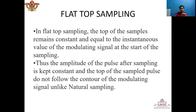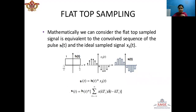In Flat Top Sampling, the amplitude of the pulses after sampling is kept constant and the top of the sample pulses do not follow the contour of the modulated signal, unlike natural samples. Mathematically, the Flat Top sample signal can be generated from the convolution of the non-priodic pulse H(T) and a train of impulses X_delta(T).